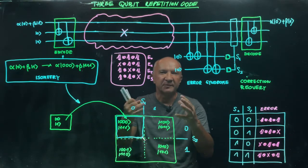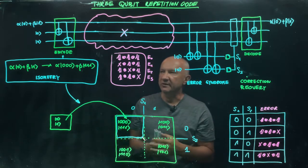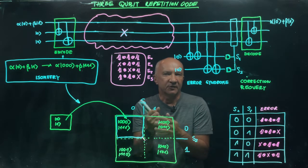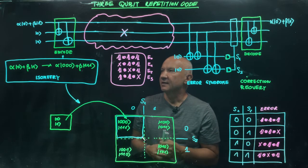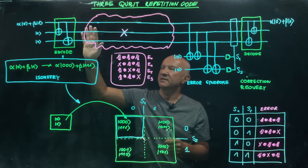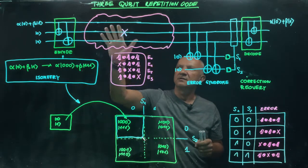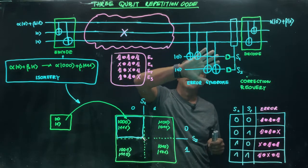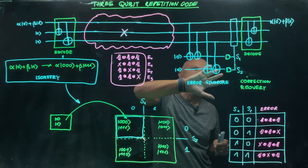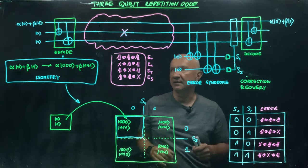Let us see how we deal with bit flip errors in the quantum scenario. We have superpositions and we have to make sure that we are going to recover the quantum state, which is in general not only 0 or 1, but a superposition of 0 and 1. I will take you through a circuit showing how to encode a qubit into three qubits, then talk about errors, the error syndrome, how we find out which error happened, how we recover the encoded state, and then how we decode it back into the original state.